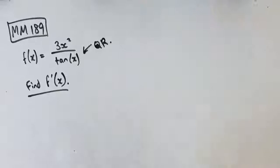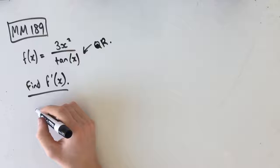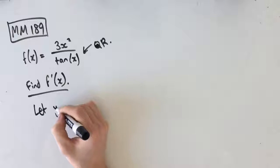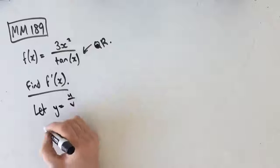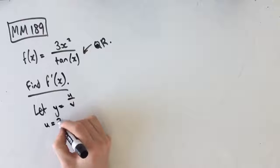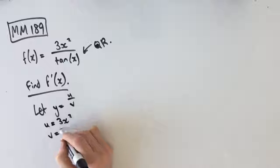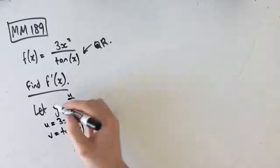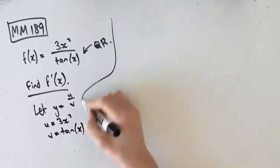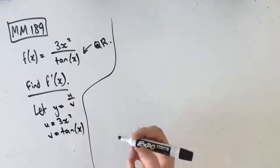Right? Sweet. So let's rewrite this and say that I'm just going to let y equal u over v, where u equals 3x squared and v equals tan x. I just like to let it equal y just so that we can use our dy dx notation and that sort of thing.